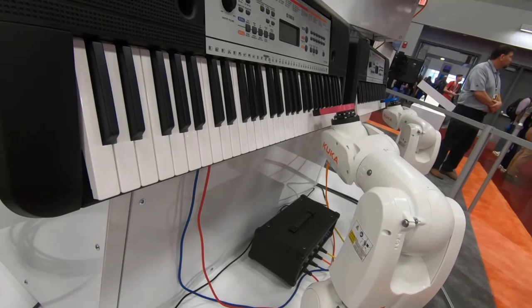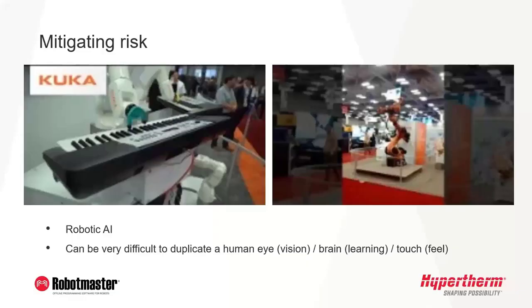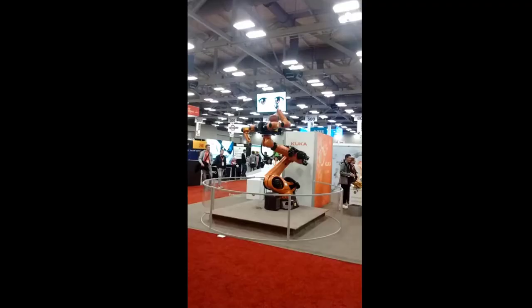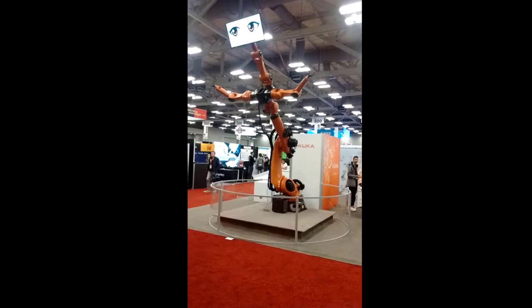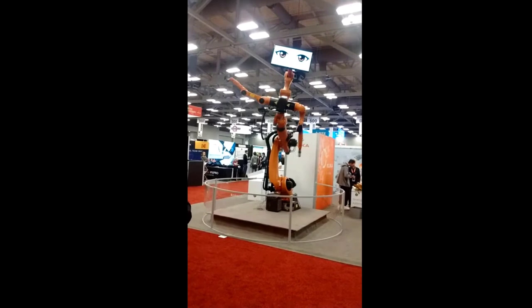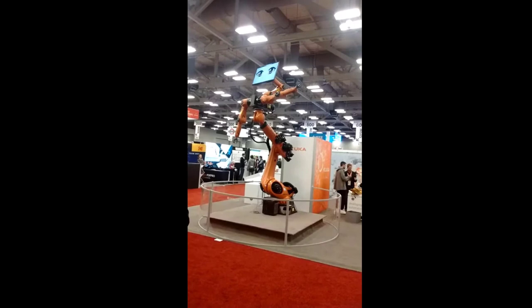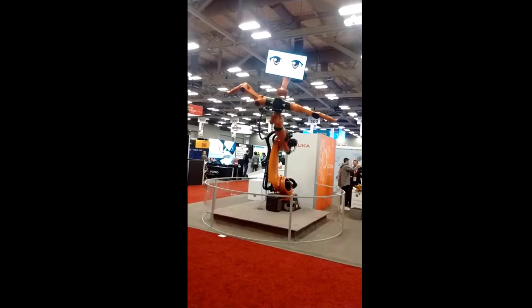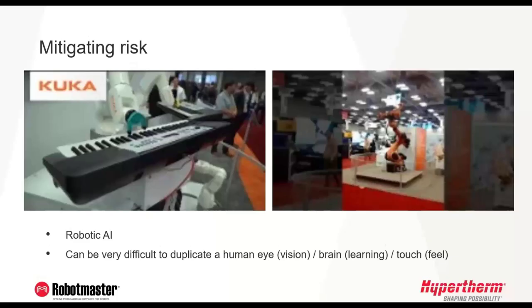That video was showing four robots working together to play a song. It sounds simple, but anybody that knows automation can understand the timing requirements and how difficult it is. The second video is a couple of robots put together to create a choreographed dance to video and also to music. Both of those applications are for entertainment purposes, but it just goes to show how difficult it can be to duplicate what a human can do.